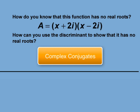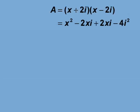In order to calculate the discriminant, we need to multiply these binomials to get a quadratic function in standard form. Here is the expansion. You'll see that the linear terms cancel each other out and the i squared term becomes a negative 1.